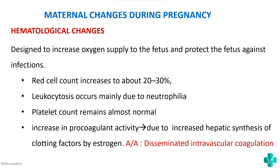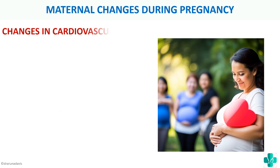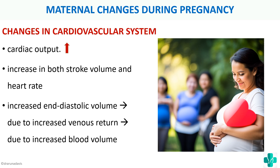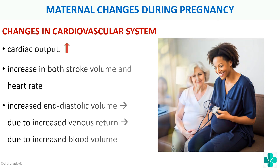For cardiovascular changes, cardiac output increases due to an increase in both heart rate and stroke volume. The increase in stroke volume occurs because of an increased diastolic volume, which is due to increased venous return, which in turn is due to increased blood volume. Since blood volume increases due to increased plasma and red cell count, venous return increases, which then causes an increase in diastolic volume, thus increasing cardiac output.